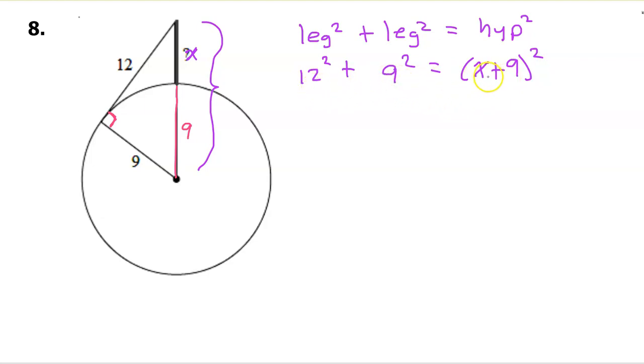Now we should be able to solve this for x very easily. 12 squared is 144, 9 squared is 81. And for now let's just leave this as (x+9) squared. Do not FOIL this out, this is the easiest way, just leave it alone. 144 plus 81 is 225.